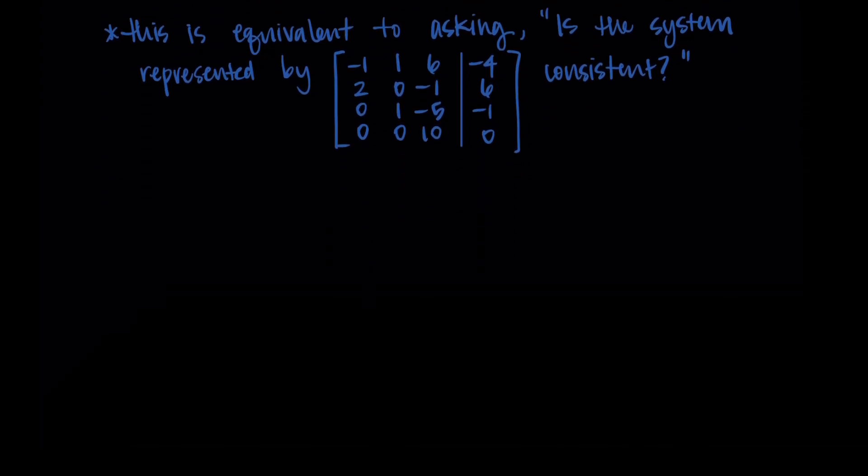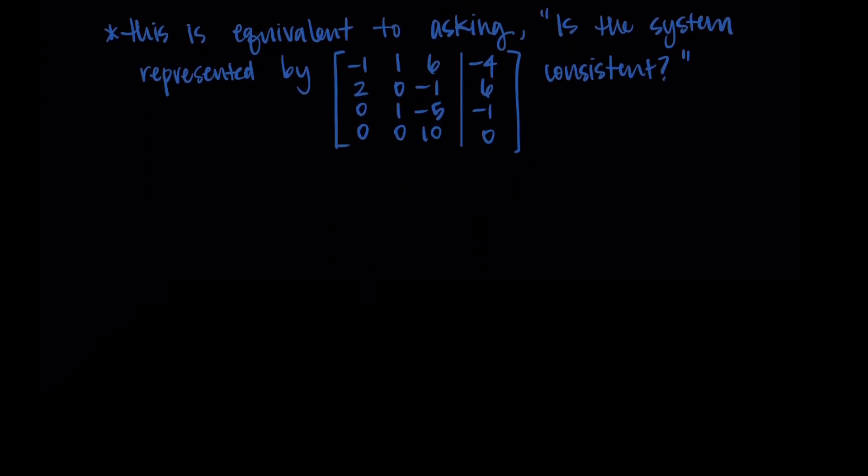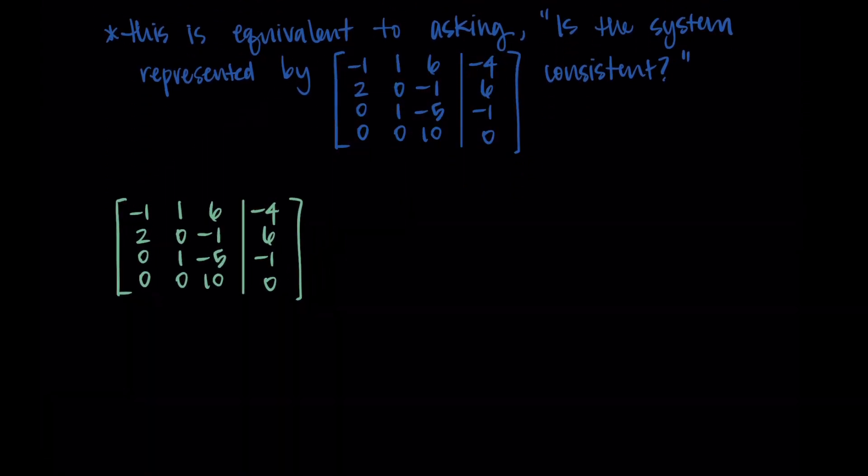So our goal is to determine if this matrix represents a consistent system when we row reduce it. And if it is consistent, then there will exist some weights that we can use to make a linear combination of these vectors. So we're going to row reduce to determine if this is consistent. And I'm going to use technology to do this. So at this point, we've already learned how to find reduced row echelon form. And with a matrix of this size, it's just going to take a while to do it by hand, and there's lots of room for error.